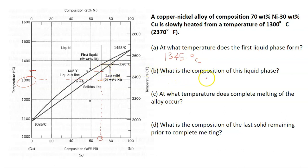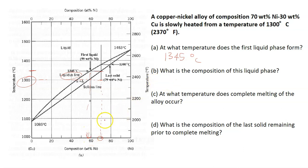Next question: what is the composition of this liquid phase? The composition of the liquid phase — you cannot say it is 70%, because that is the composition of the solid. For the liquid, you need to look at the intersection at the liquidus line. The intersection at this temperature is when nickel is at 59 weight percent. So you just read down here — this should be 59 weight percent of nickel.